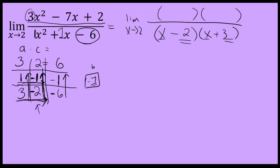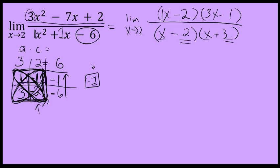The factorization is hiding inside the tic-tac-toe board diagonally in the bottom left-hand corner. 1 and negative 2 represent the coefficients of the first factor, giving x minus 2. The second factor uses 3 and negative 1, giving 3x minus 1. So the factorization of 3x squared minus 7x plus 2 is x minus 2 times 3x minus 1. You can verify this by multiplying out to get 3x squared minus 7x plus 2.